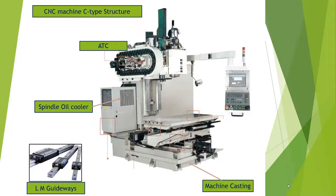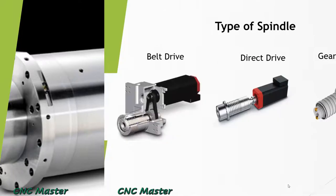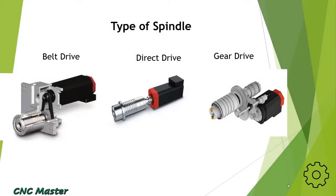Let's discuss about the spindle. The spindle is the heart of the machine. There are different types of spindles used in CNC machines: belt drive, direct drive, and air drive. Let's discuss one by one in detail.